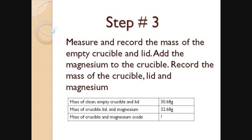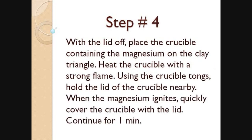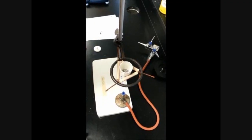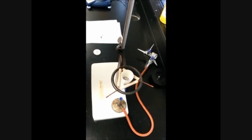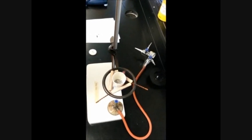Moving on to step 4. With the lid off, place the crucible containing the magnesium on the clay triangle. Heat the crucible with a strong flame using the crucible tongs. Hold the lid nearby. When magnesium ignites, quickly cover the crucible with the lid and continue for 1 minute.